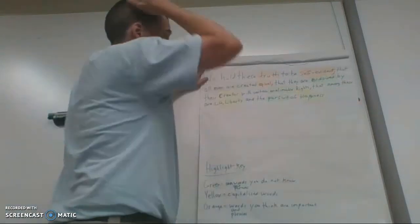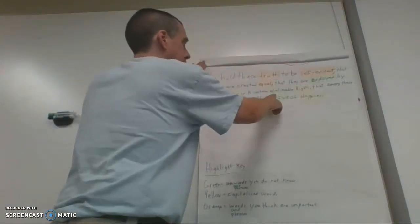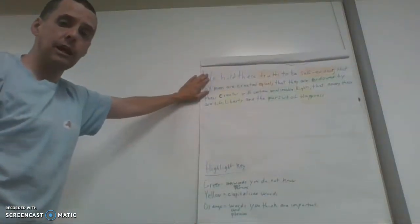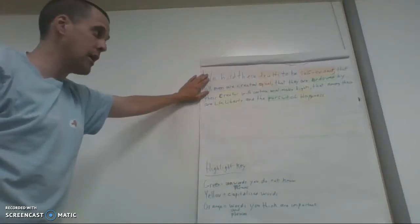And then for our green, for things that I was confused about, endowed, unalienable, and pursuit. And what we will do later on is we will get out dictionaries or we will get out our computers and then we will look up those phrases to see what we can figure out for them.